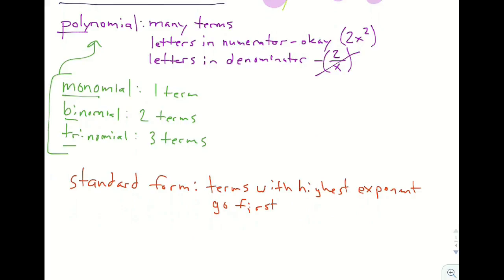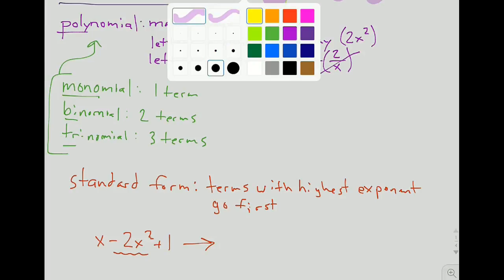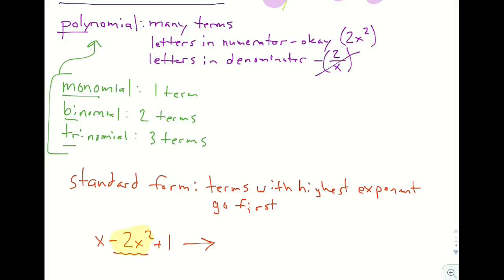So for example, if you had something like X - 2X² + 1, that would become, in standard form, this term being first, because that term right there has the highest power. So we're going to write that one first. And the negative comes along with whatever it is in front of. So even though it's X - 2X², it is going to be a negative 2X² that comes out to the front.